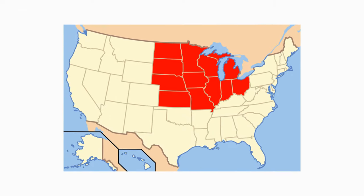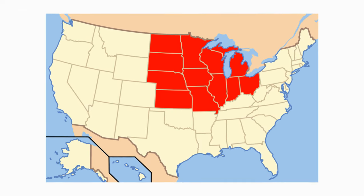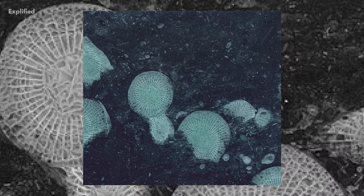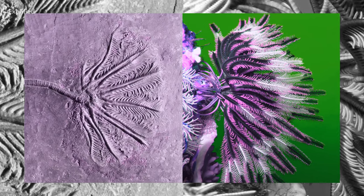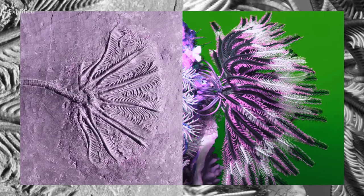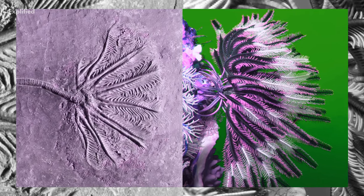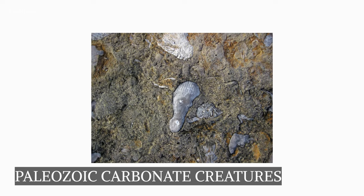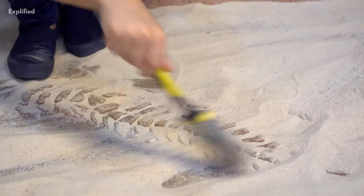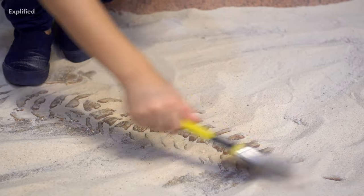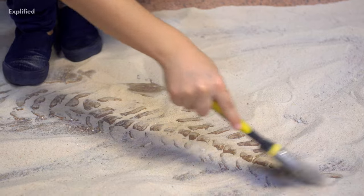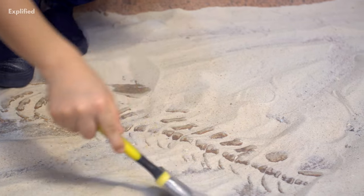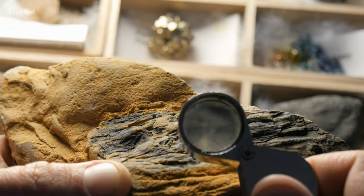Throughout the American Midwest, Mississippian marbles and limestones are exposed, containing fossils of flower-like invertebrates known as crinoids, intricate corals, and other Paleozoic carbonate creatures. Talking about the fossils in this region, limestones which originated largely during the Mississippian period are the most prevalent rocks in Rock Canyon.